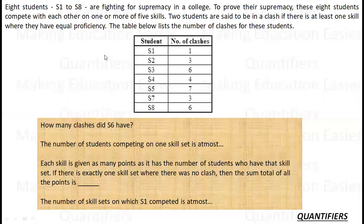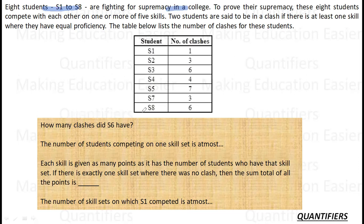So the set says: there are eight students, S1 to S8. These eight students are fighting for supremacy in a college. To prove their supremacy, they compete with each other on one or more of five skills — Skill 1 through Skill 5. Two students are said to be in a clash if there is at least one skill where they have equal priority. For example, S1 can have a clash with S5 if they share priority on, say, skill P3.